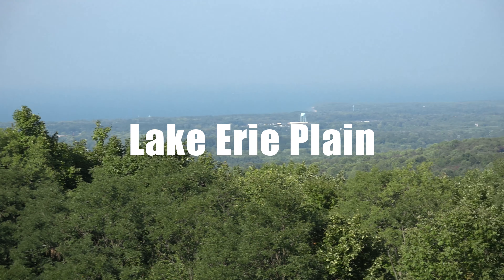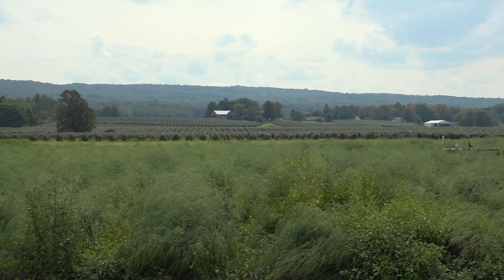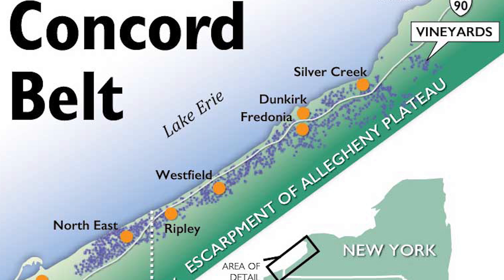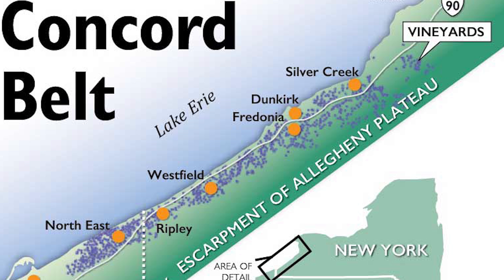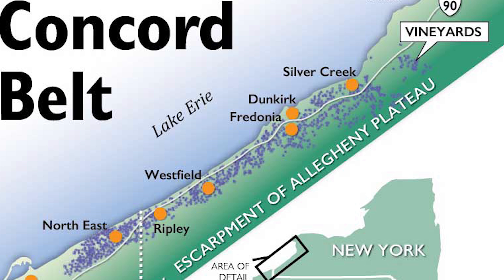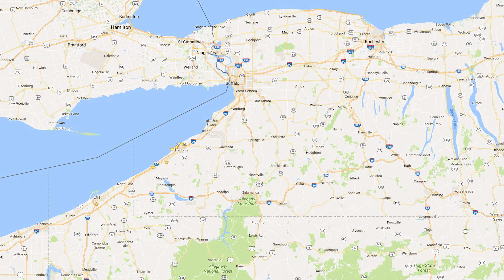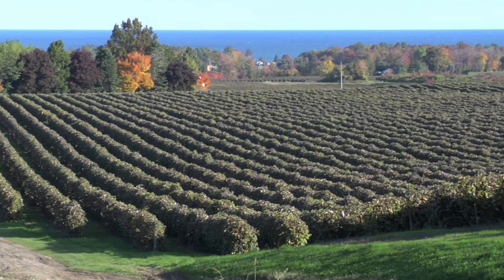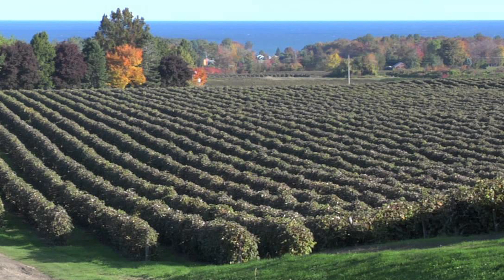You can see the lake through the trees over there, and you can see the hill, the escarpment. In the Lake Erie region, we grow our grapes on the Lake Plain — the area sandwiched between the lake and the escarpment. When you compare the Finger Lakes and the Great Lakes, I say small lake, small lake effect; big lake, big lake effect. We live and die by Lake Erie and how it affects our weather.